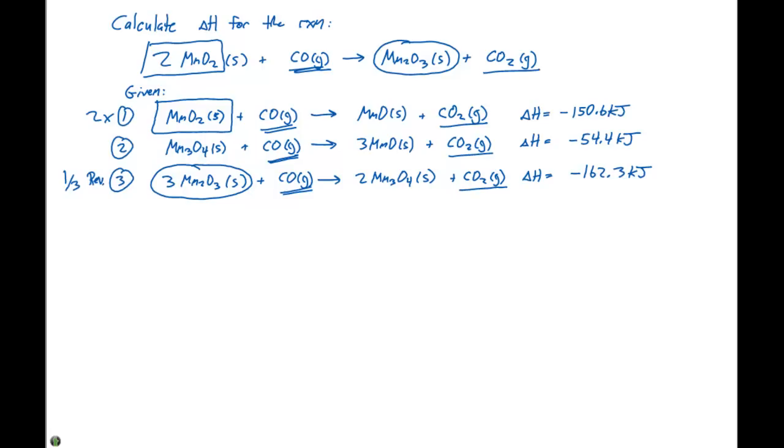Let's take two times reaction number one. That's going to give us 2MnO2 as a solid plus 2CO as a gas, giving us 2MnO as a solid plus 2CO2 gas. And our delta H is going to equal two times negative 150.6 kilojoules.